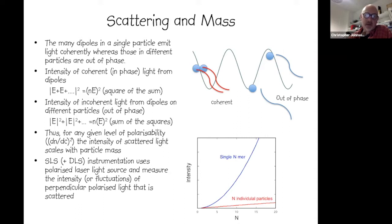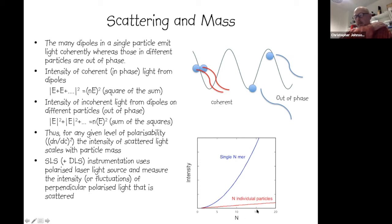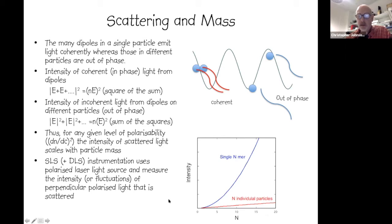For any given level of polarizability, the intensity of scattered light scales with particle mass. Both static and dynamic light scattering instrumentation use polarized laser light sources, and we measure the intensity or fluctuations of light that is perpendicular to the incident beam. If we consider individual particles, the scattered intensity is minimal, but clumping them together into a single particle — retaining coherence — gives a massively increased amount of scattered light.